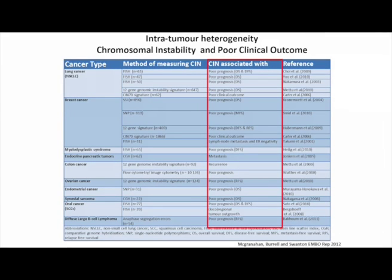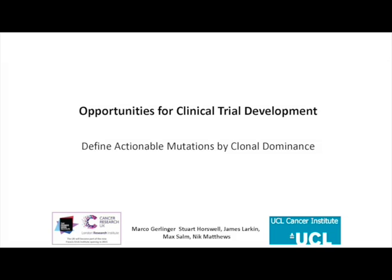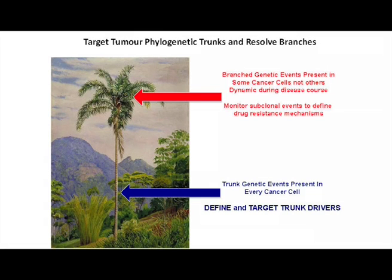We've known for many years that chromosomal instability — variation in whole chromosomes or parts of chromosomes — is a poor prognostic feature, emphasizing that heterogeneity is not a new phenomenon; we're simply resolving it much better than ever before. Why is this relevant to clinical trial opportunities? If we think about tumors like trees, targeting the early events — the so-called trunk events — present ubiquitously at every site of disease might be a more tractable approach than targeting individual subclones with drivers present in one branch but not another.